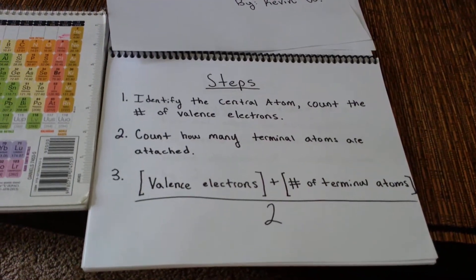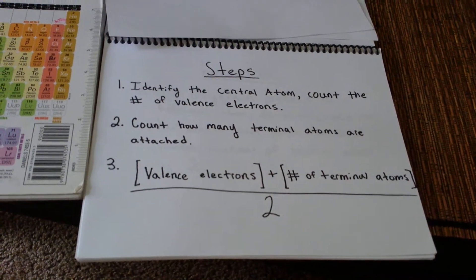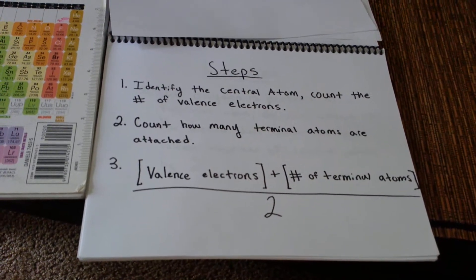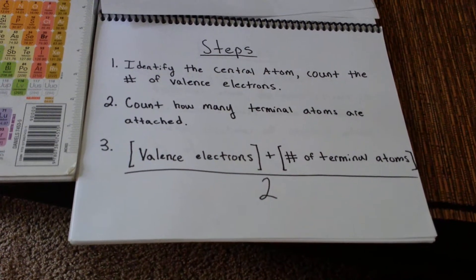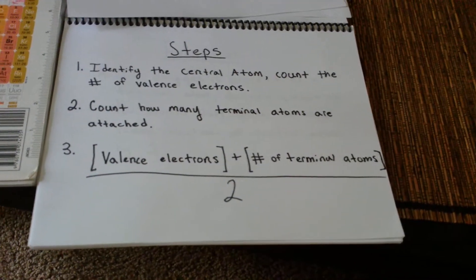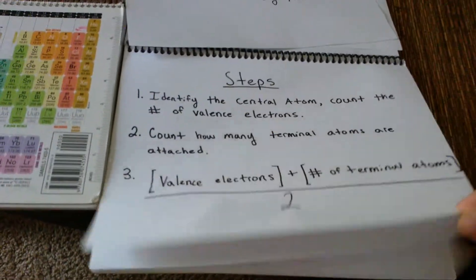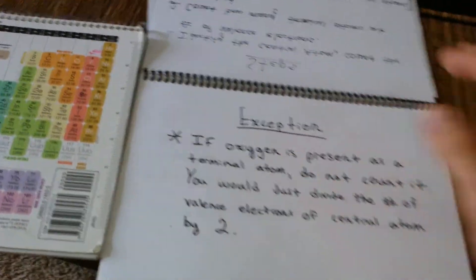Count how many terminal atoms are attached for step two. And then step three, you're going to add valence electrons of the central atom plus the number of terminal atoms and then divide that by two. Let's see a few examples, but before we do so...